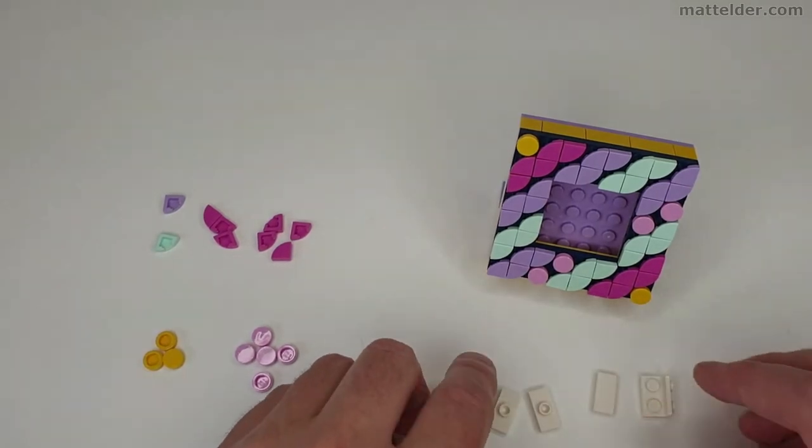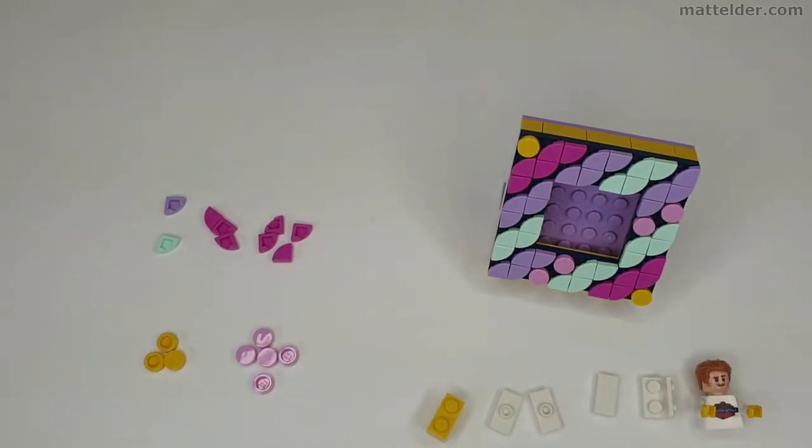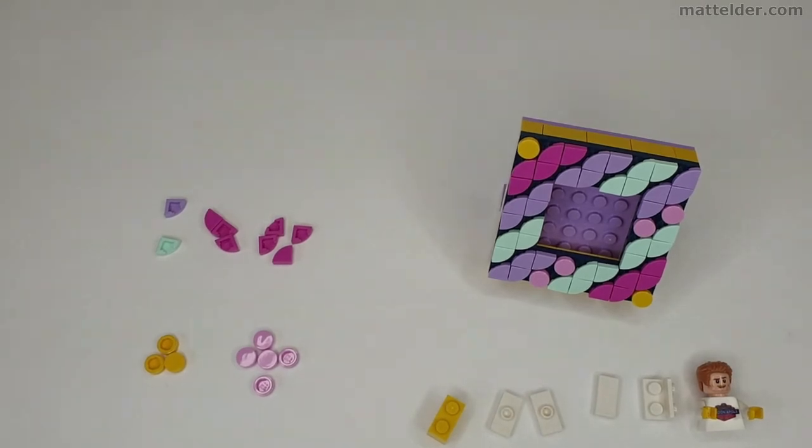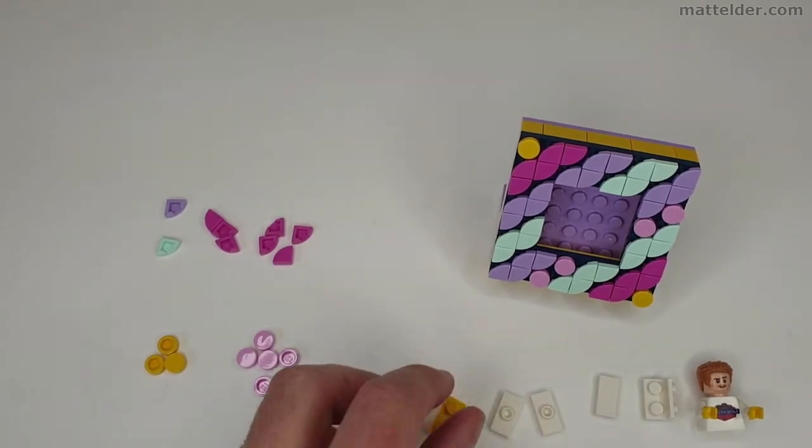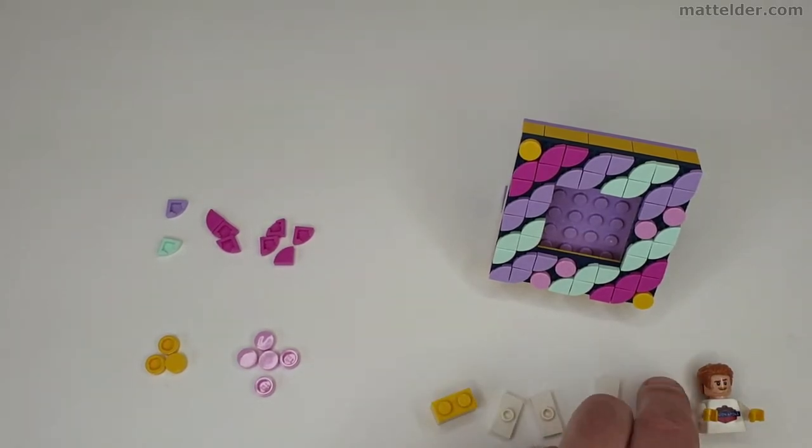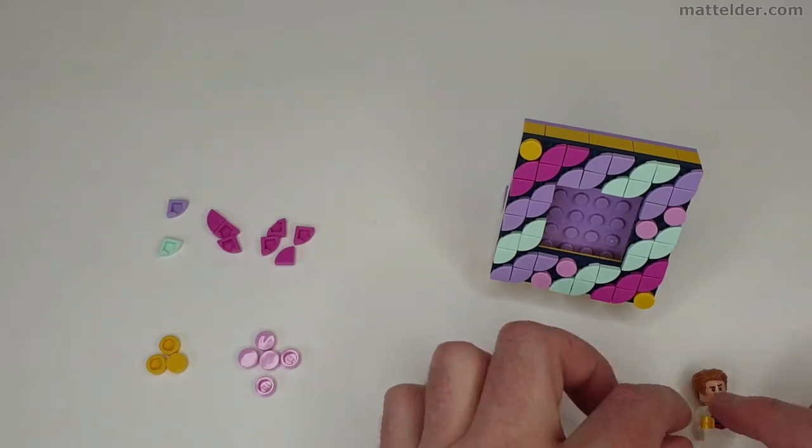So here are some additional pieces I've just pulled out so we can get a minifig sitting in there like a picture frame. Sort of like a Hogwarts sort of thing where they're half alive. So we just have a one by two yellow brick, two one by two jumper plates, a one by two tile, a bracket, and a minifig there.